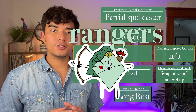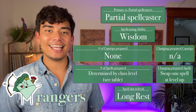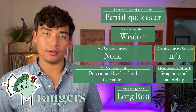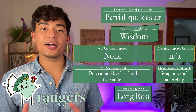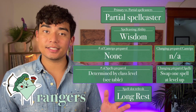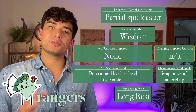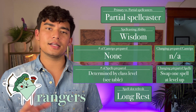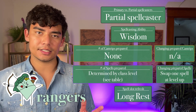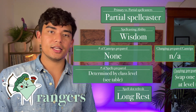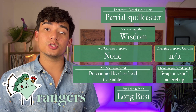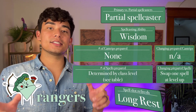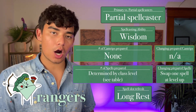Rangers are partial spellcasters, meaning they get access to level 1 through 5 spell slots as they level up. Their spellcasting ability is wisdom, and rangers don't get access to any cantrips. The number of spells they can prepare is determined by their class level — search the ranger class table on D&D Beyond for more specifics. You can swap one spell every time your character levels up, and spell slots refresh after a long rest.